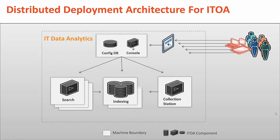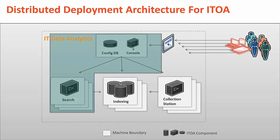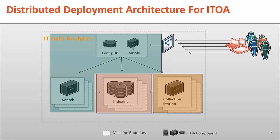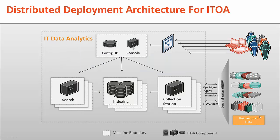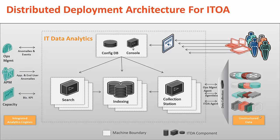The web console, configuration database, and search engine make up one component. The search engine is an item that can be separated out into scaled servers to allow for simultaneous searching. The indexing component can also be scaled out to do parallel operations across multiple servers. The collection station can have multiple servers to add disparate collection points throughout the infrastructure. The collection stations access data either through an agent or agentlessly, and the console allows you to export the data with other integrations or other analytics components.